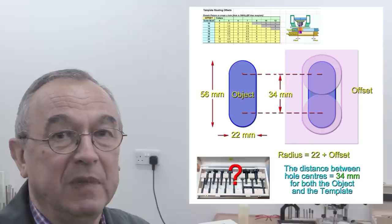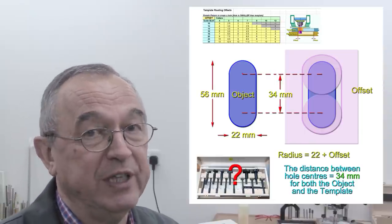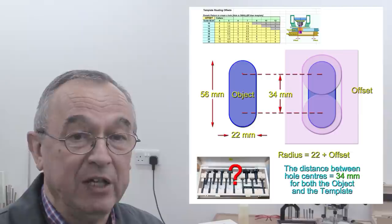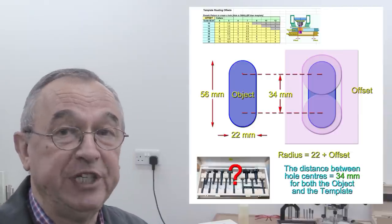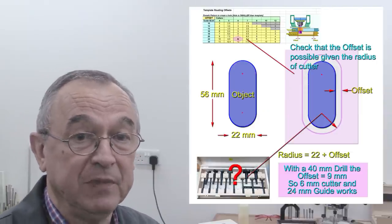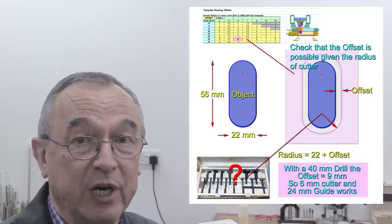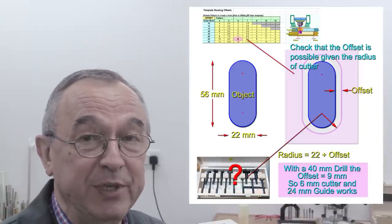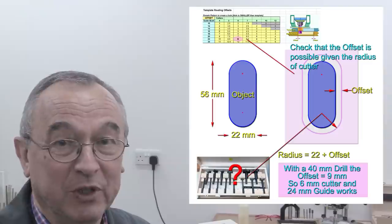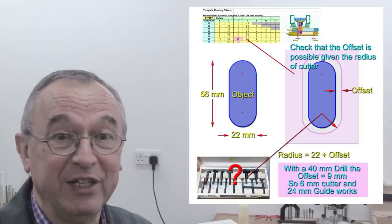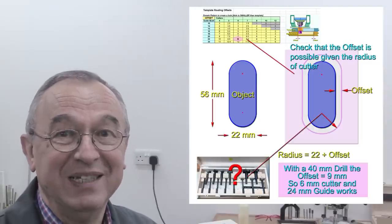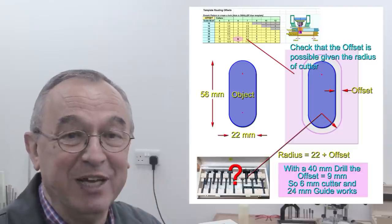So, I used the table and looked at my available Forstner bits, and so I've chosen a 40mm drill, which then requires a 9mm offset, because 40 minus 2 times 9 is 22, and that was the diameter across those original holes there.